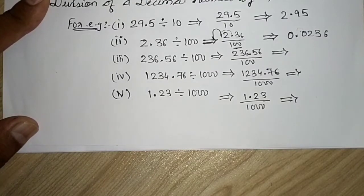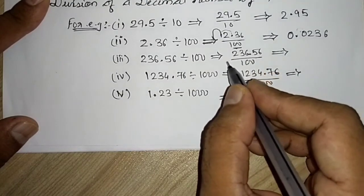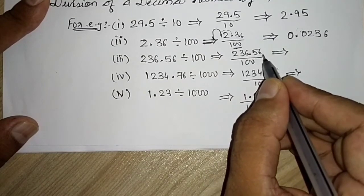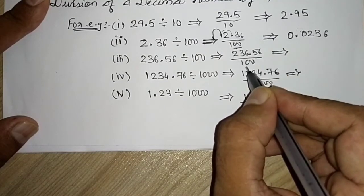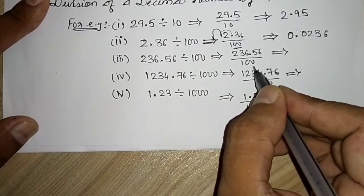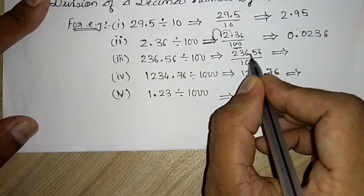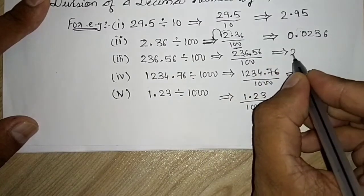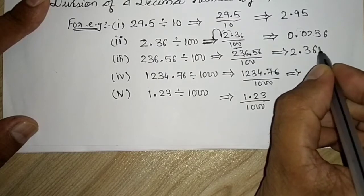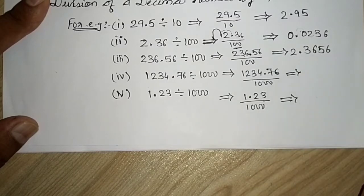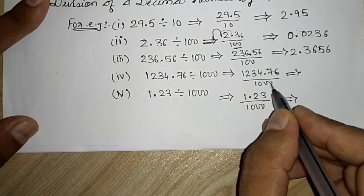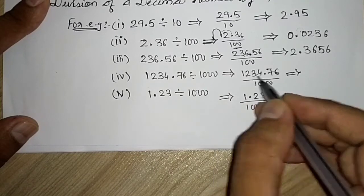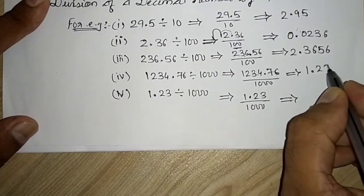Now for 236.56 ÷ 100: same procedure, shift two decimal places — 1 and 2. The answer is 2.3656. Similarly, dividing 1234.76 by 1000 means three zeros, so shift three places to get 1.23476.